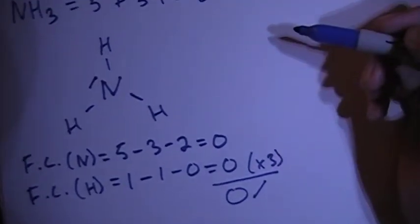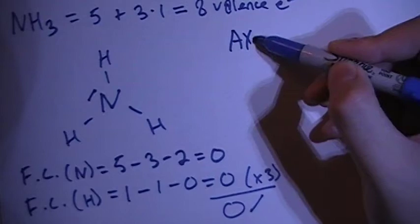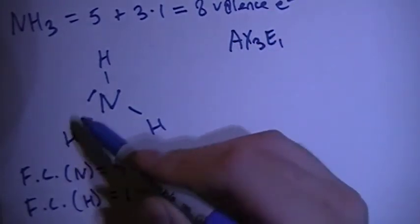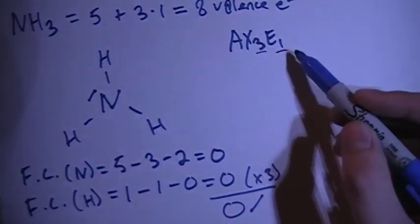And now we can go ahead and start talking about the shape. This is going to be an AX3E1 because there's 3 bonding atoms and 1 non-bonding pair of electrons. So 3 atoms, 1 pair of electrons.